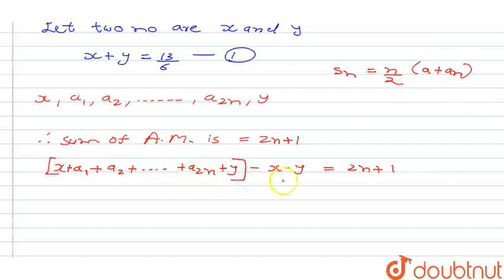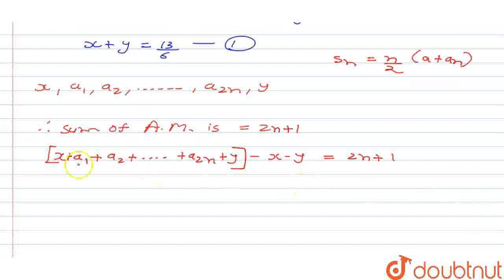So as we can see, a1 to a2n total number is 2n. But x and y are added, that is extra 2 terms are there. So instead of n, we will write 2n plus 2.